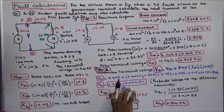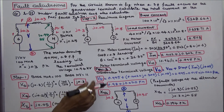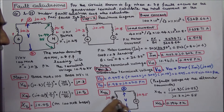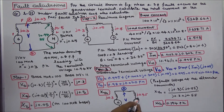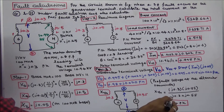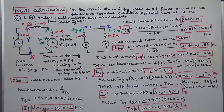This voltage (0.99 + J.020) is the Thevenin voltage — the prefault voltage at the alternator terminals. Next we calculate the Thevenin reactance. The generator reactance J.3 is in parallel with (line reactance J.05 + motor reactance J.5 = J.55). So X_Thevenin = (J.3 × J.55) / (J.3 + J.55) = 0.194 per unit. Fault current IF = V / X_Thevenin = (0.99 + J.020) / J.194 = 0.103 − J5.052 per unit.